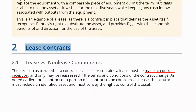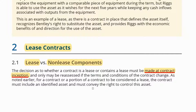Often leases come as part of bigger contracts that contain different obligations. In any contract, we might need to identify the lease and the non-lease components. A non-lease component is any component of the contract that doesn't look like a lease. The decision as to whether a contract is a lease or contains a lease must be made at the contract inception. The first thing to do in accounting for leases is to identify whether the contract contains a lease or not, and then to check the lease and non-lease components.